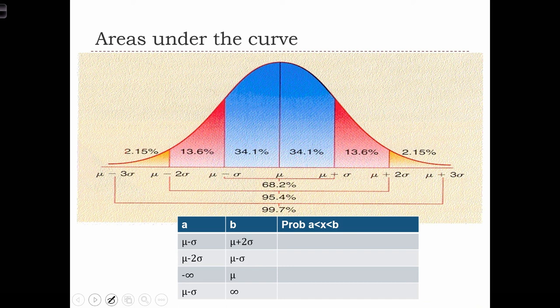And I want you to use the curve above to give me the probability that x is between those two bounds. So in the first case, I want to know the probability that x is between μ minus σ, which is over here, and μ plus 2σ, which is over here.